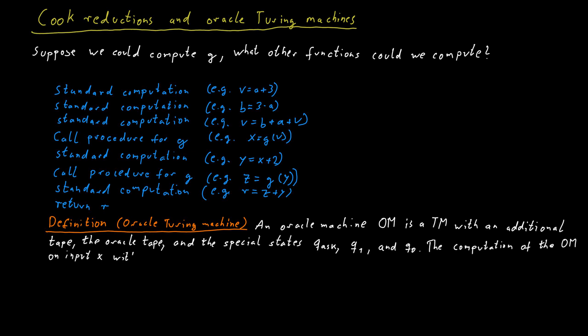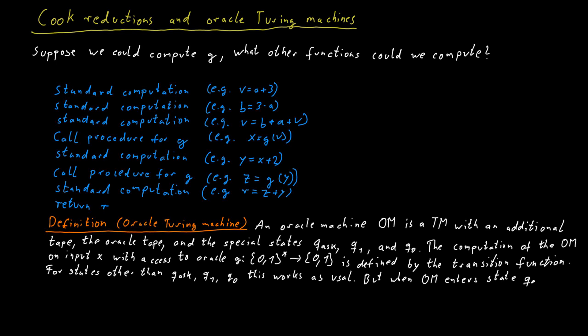The computation of the Oracle machine on some input X with access to an Oracle to a function G is defined based on the transition function. For internal states which are different from qask, q1, and q0, everything is as it would normally be in a Turing machine. However, when the Turing machine enters the internal state qask, it means it's now asking a question to the Oracle. And then in a single step, the machine will move to internal state q1 or q0 depending on whether G of Z is equal to one or zero, where Z is the contents of this special Oracle tape at this point in time.